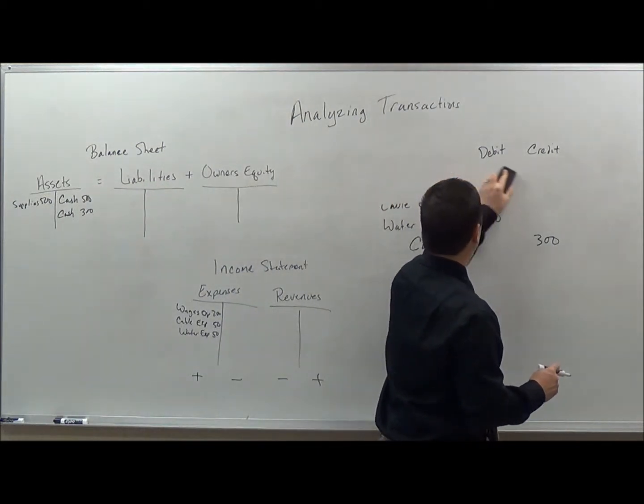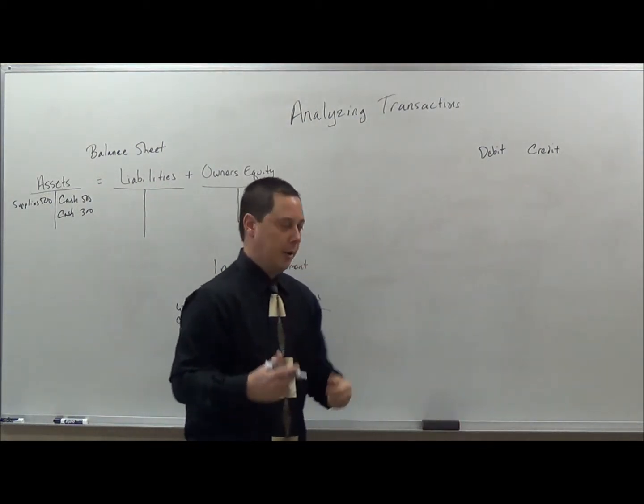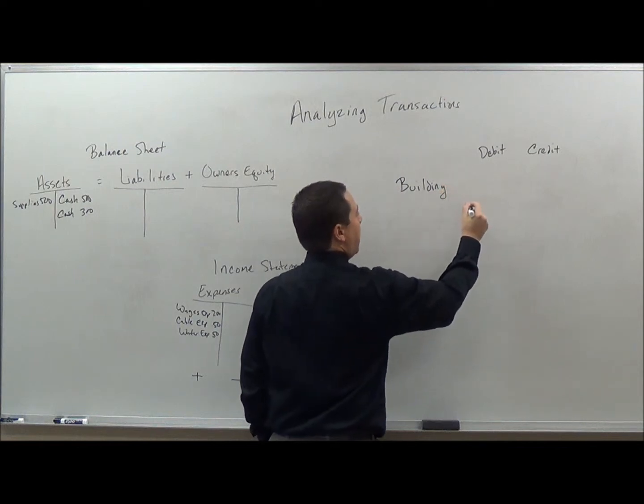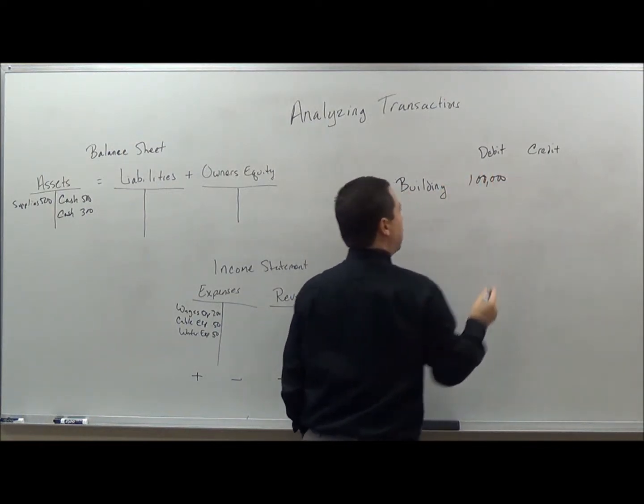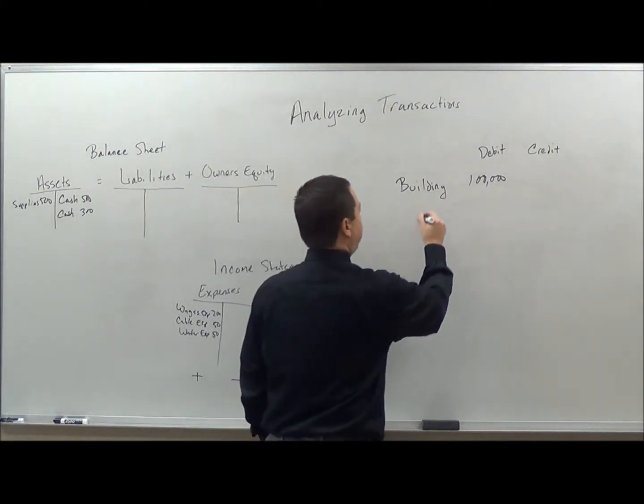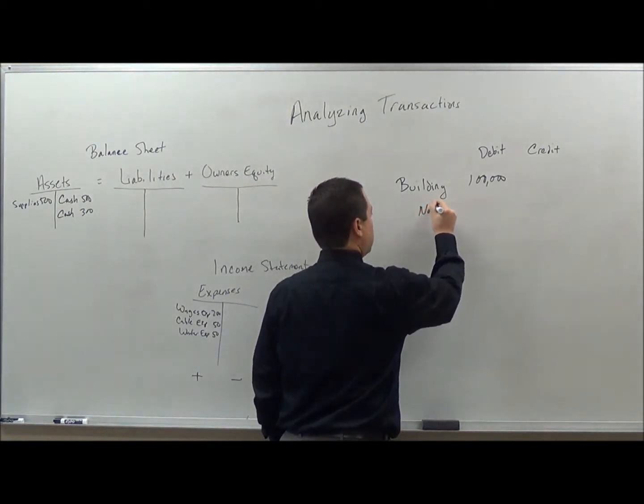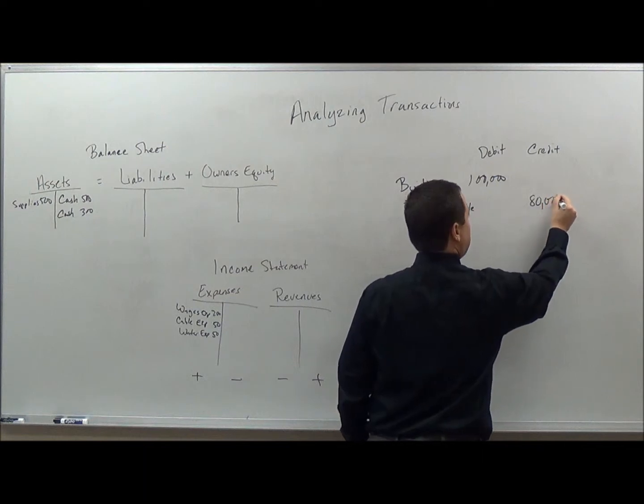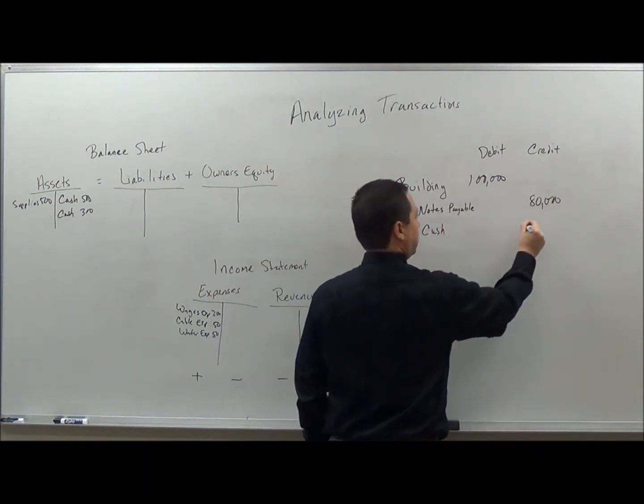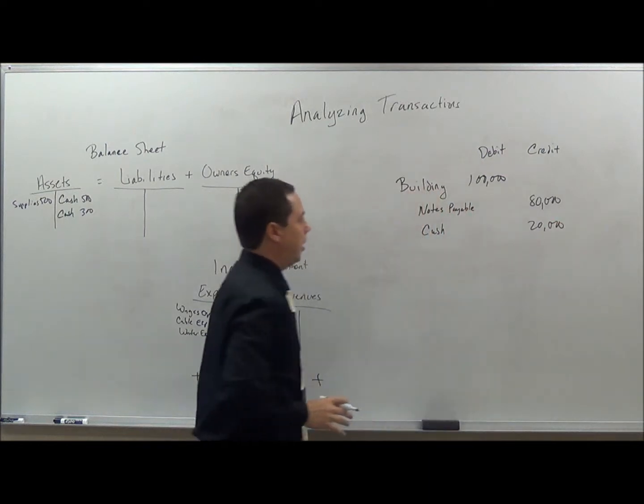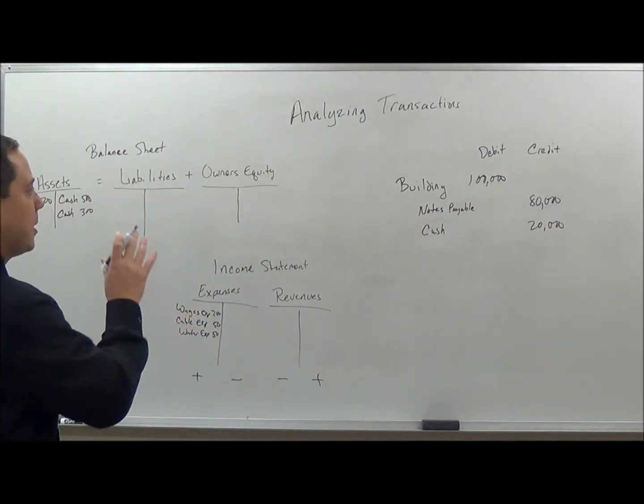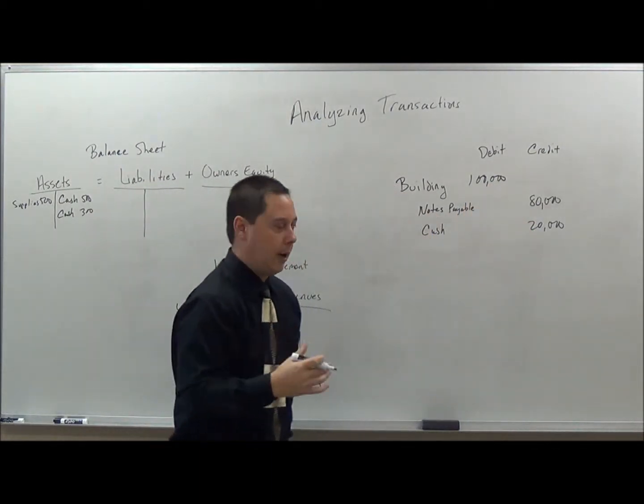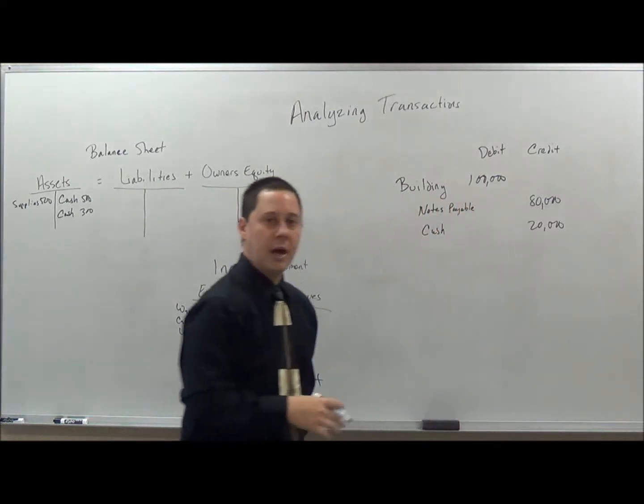So let's take a look at here and I'm going to do another transaction. So I'm going to purchase a building. So I'm getting an asset of a building and I'm going to pay $100,000 for it. But I'm not just going to pay with notes payable. I'm going to have a portion of it and some of it I will have in cash.